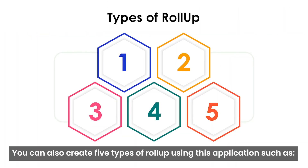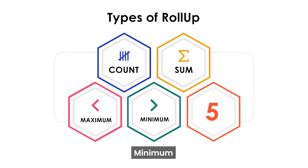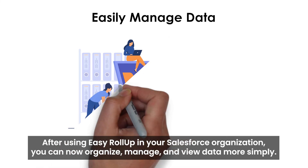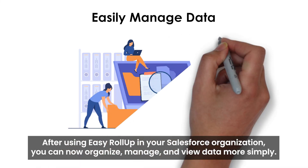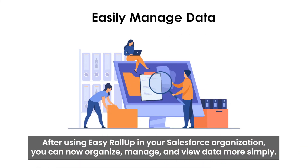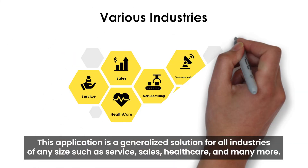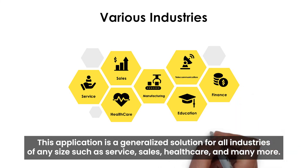Easy Roll-Up also shows a graphical representation of data in the form of bar and donut charts to understand the data better. You can create five types of roll-up using this application: Count, Sum, Maximum, Minimum, and Average. After using Easy Roll-Up in your Salesforce organization, you can now organize, manage, and view data more simply.